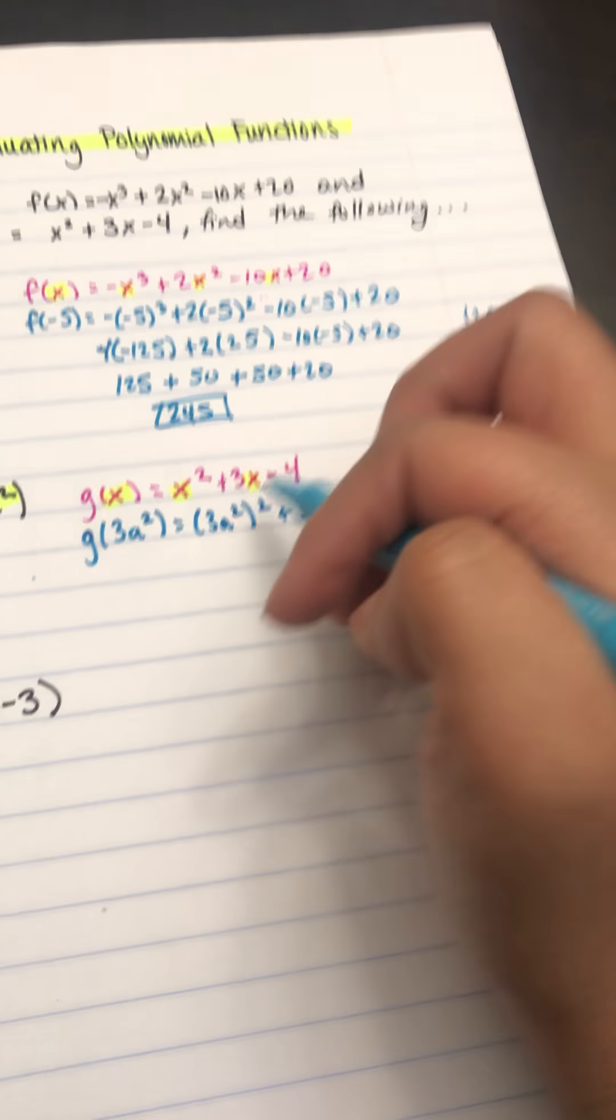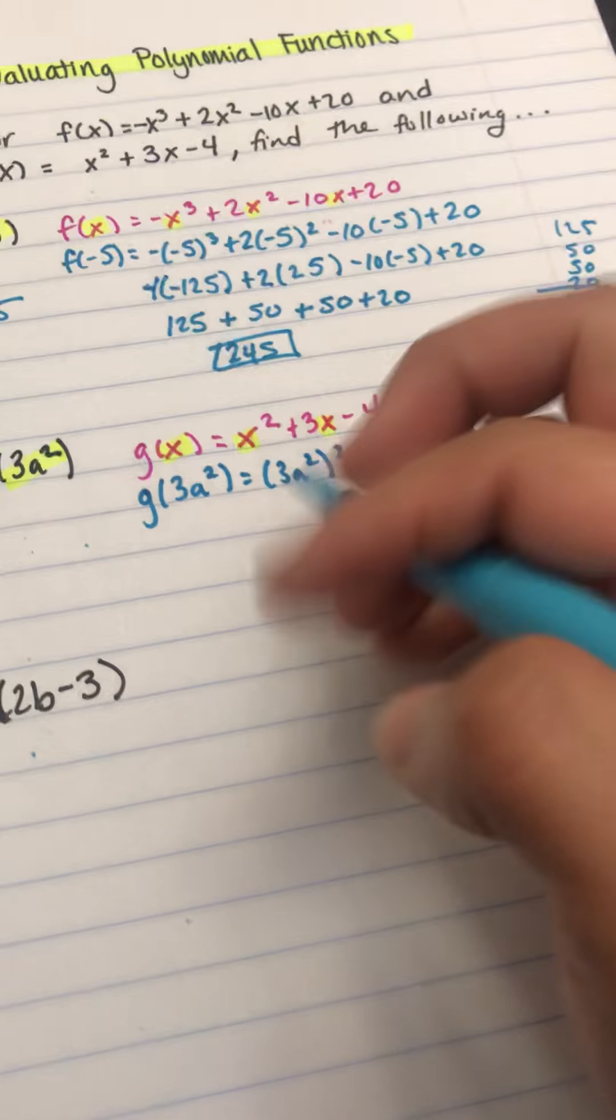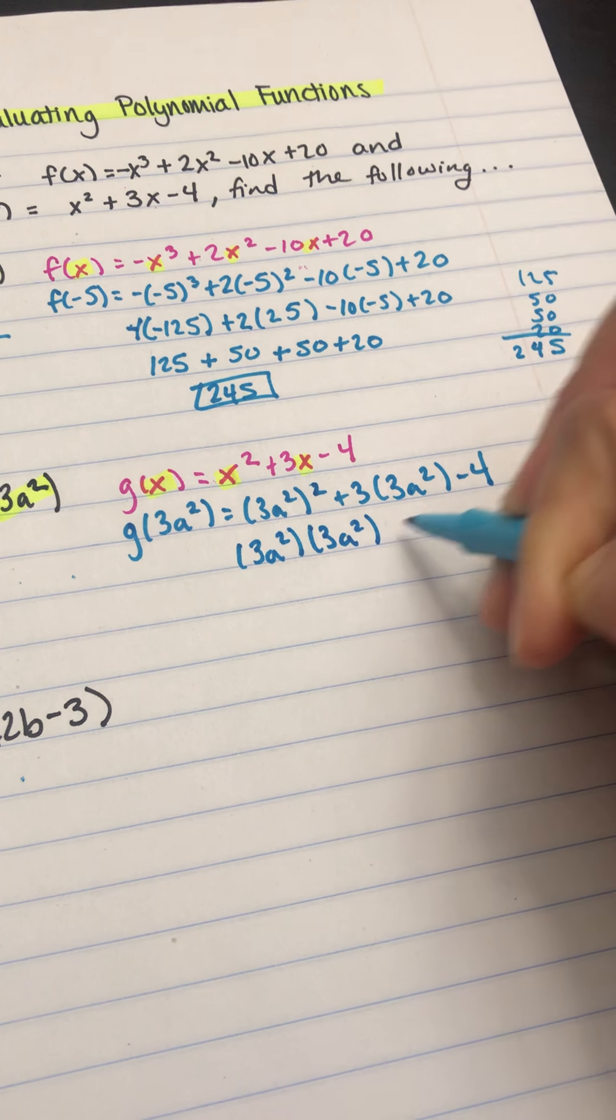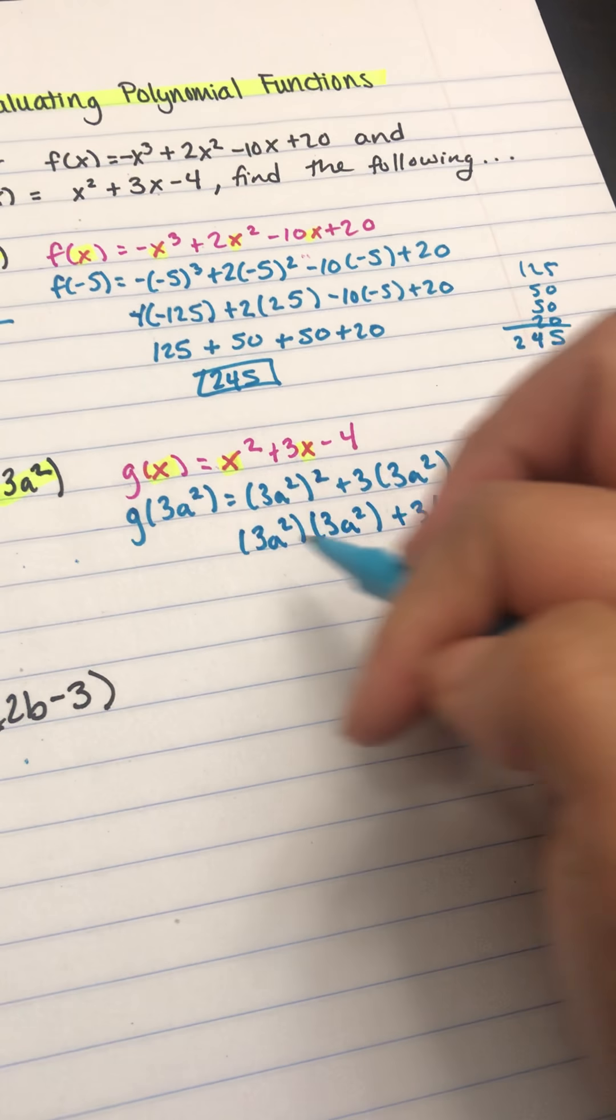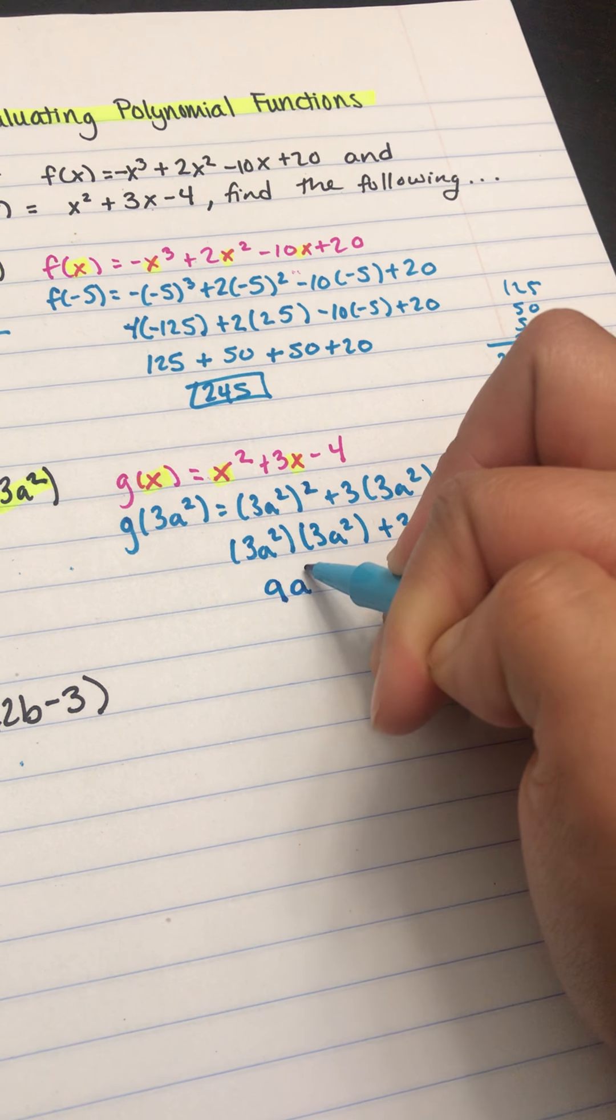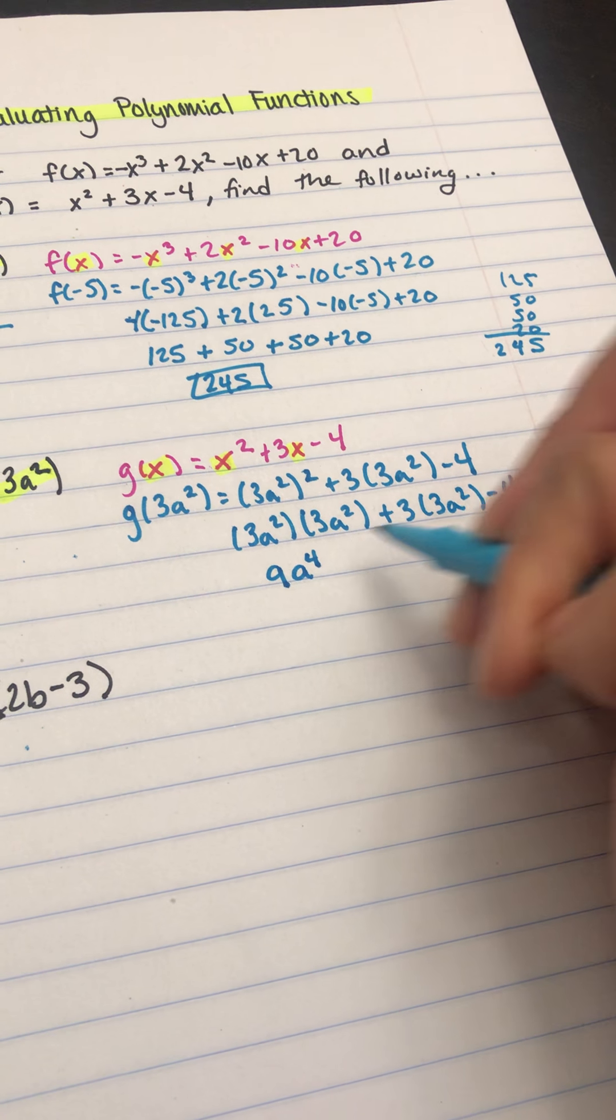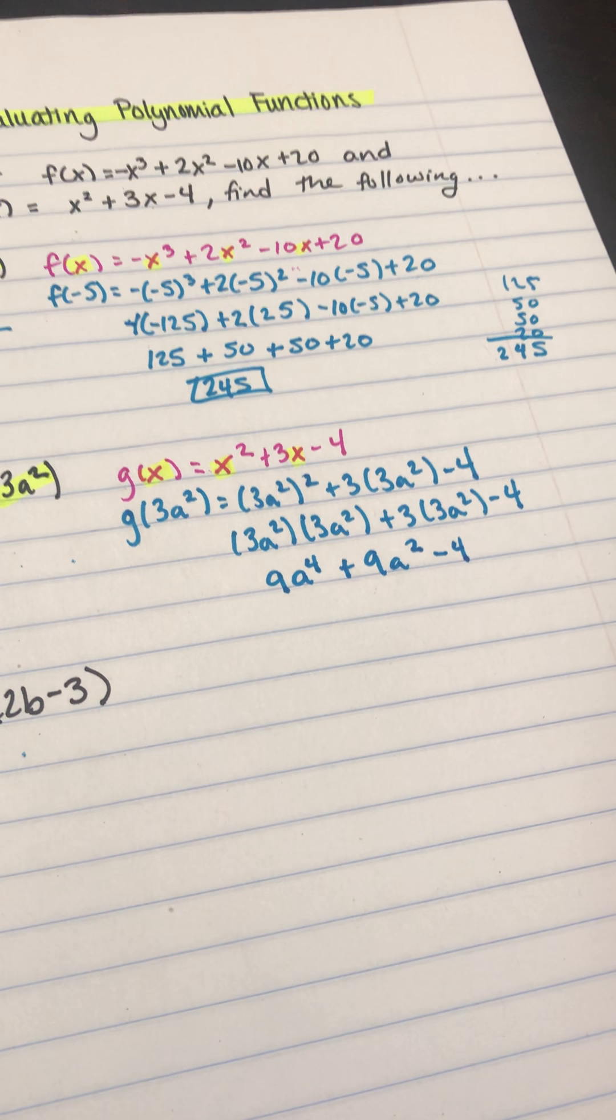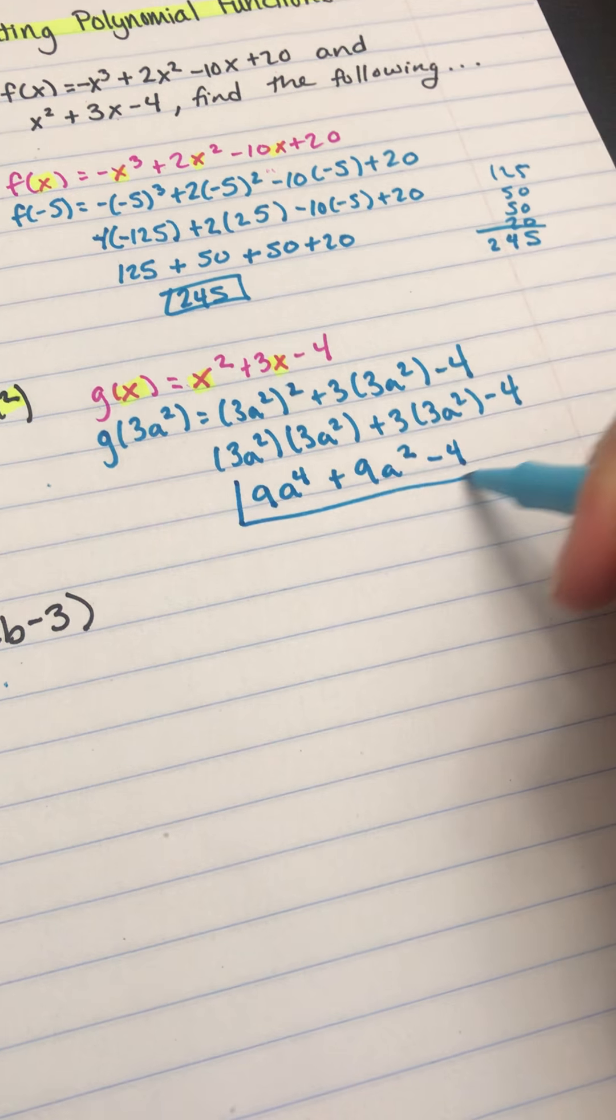From here, I'm squaring it. Remember, squaring just means you're multiplying it times itself. So you could also write this as 3a squared times 3a squared. Here, 3 times 3 is 9, and a squared times a squared is a to the 4th, because when you multiply, you add exponents. 3 times 3a squared is 9a squared, and then we have the minus 4. Since none of these are like terms because the exponents are different, you can leave your answer like that.